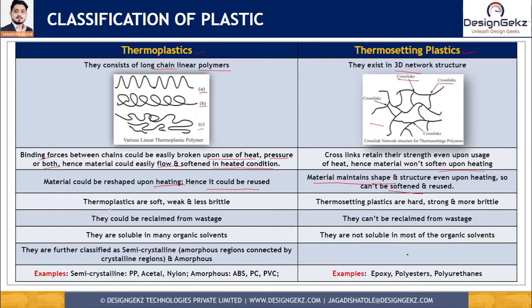Thermoplastic materials are soft, weak, and less brittle, while thermosetting plastics are hard, strong, and more brittle. For structural applications requiring high strength, thermosetting plastics are preferred; for normal applications, thermoplastics are suitable. Thermoplastic materials can be reclaimed from waste and recycled, whereas thermosetting plastics cannot. Examples of thermoplastics include polypropylene, acetal (polyoxymethylene), nylon (polyamide), ABS, polycarbonate, and PVC. Examples of thermosetting plastics include epoxy, polyesters, polyurethane, bakelite, melamine, melamine formaldehyde, and phenol formaldehyde.